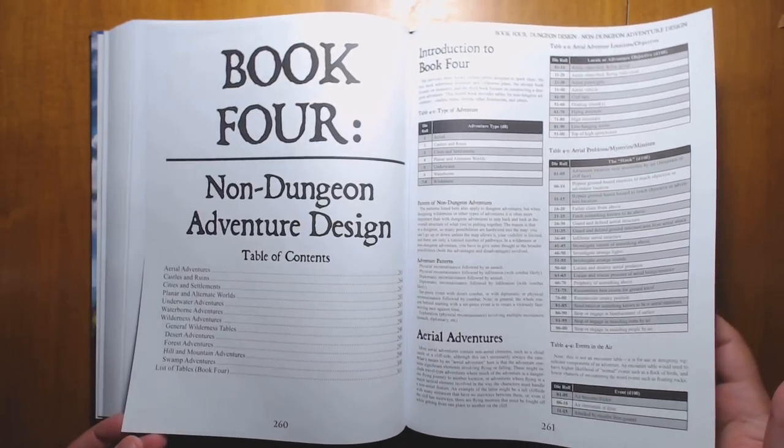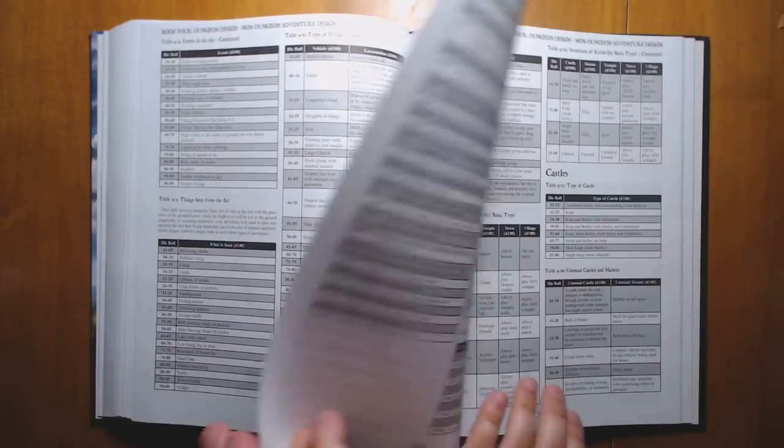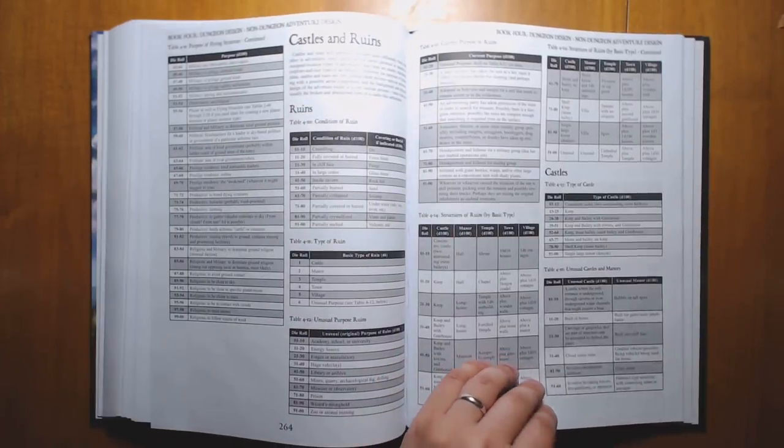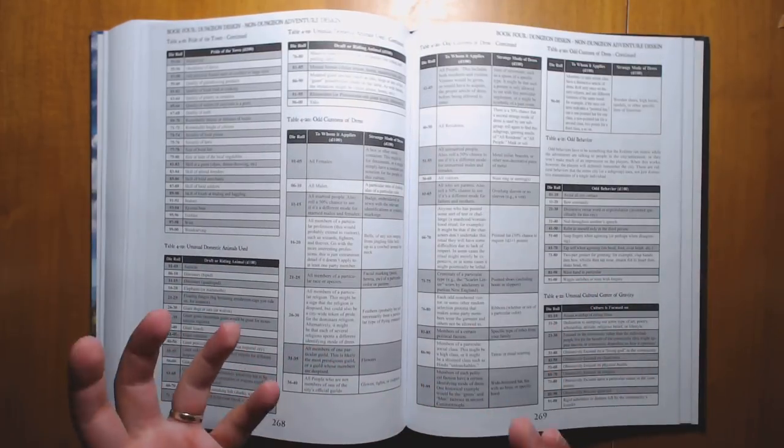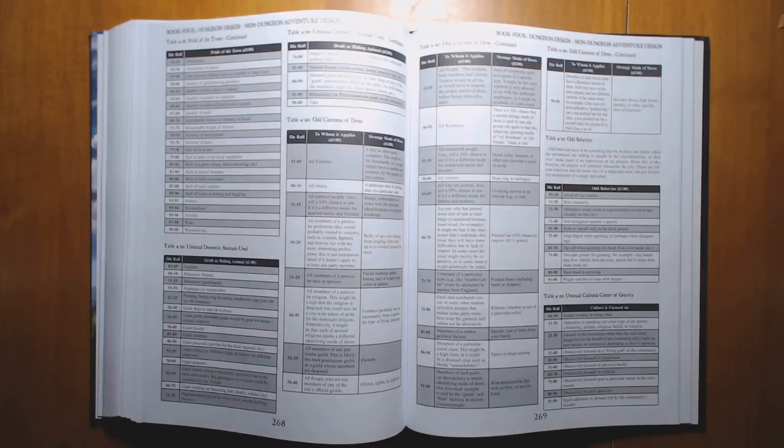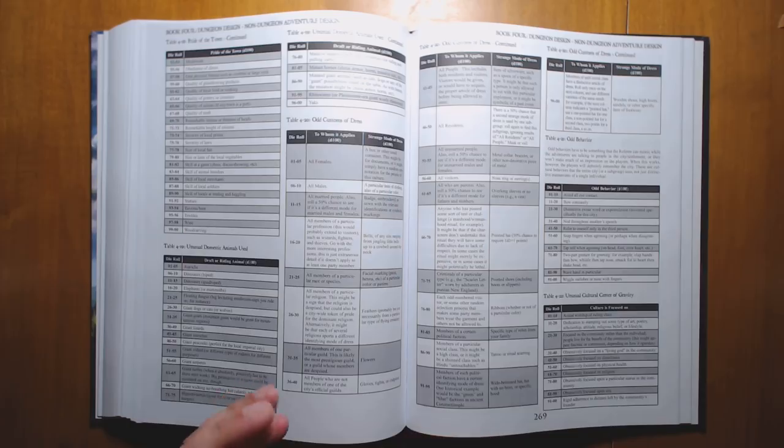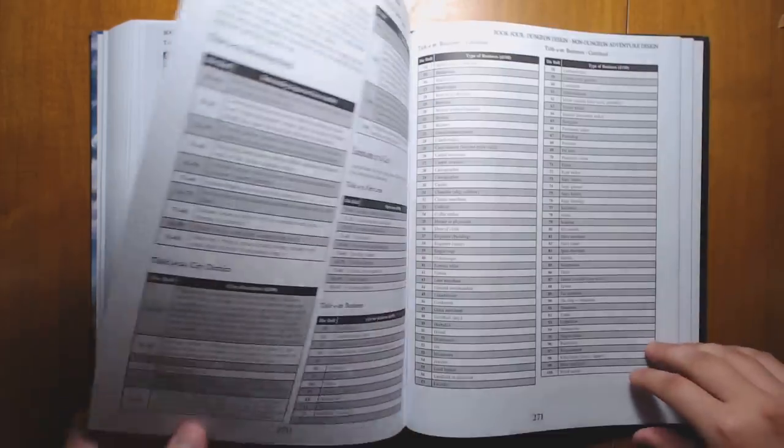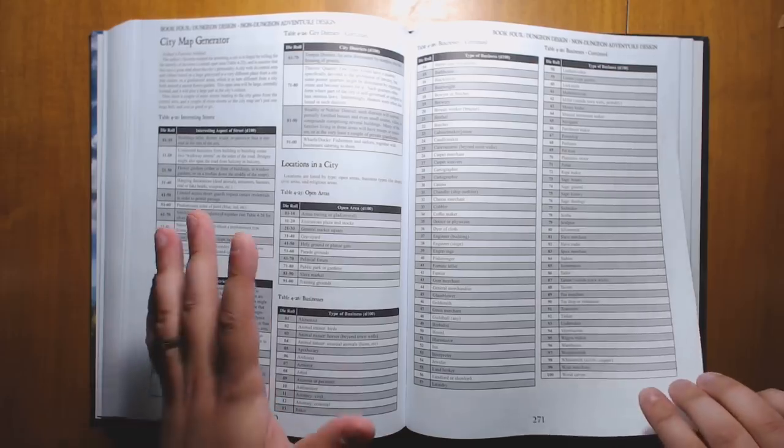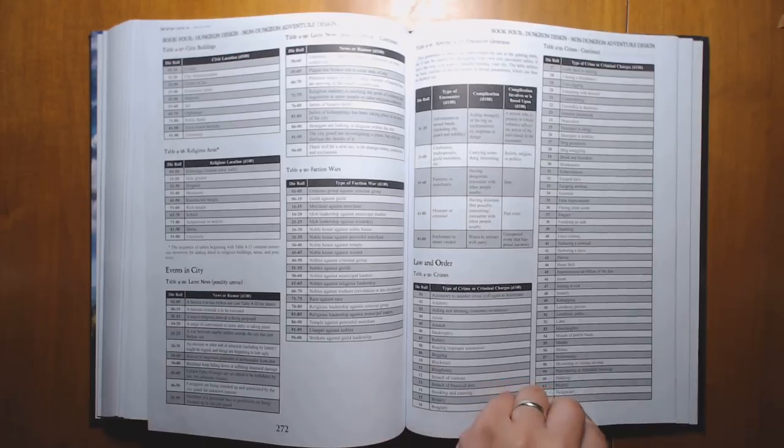And non-dungeon adventure design. The most useful stuff in here I think is mostly the city tables. So castles, ruins, and cities are probably what's going to be used the most. Some tables here that remind me a little bit of Vornheim. But it's mostly focused on just ideas and content rather than the DM tricks that Vornheim is full of. Vornheim is more like a procedure guide for running cities with some good random tables. Whereas this is mostly just random tables.